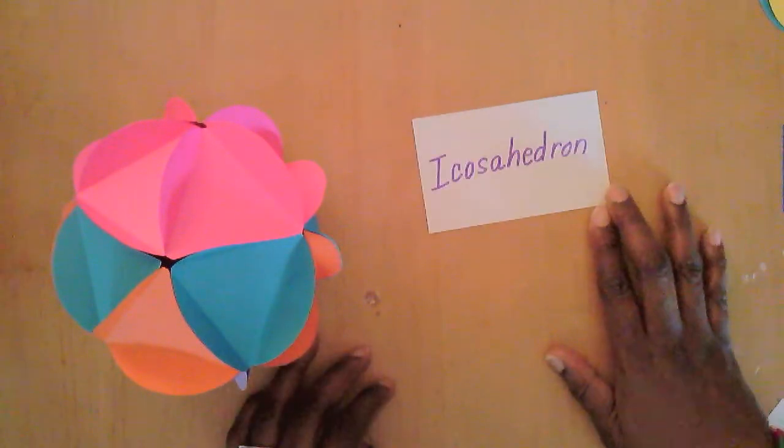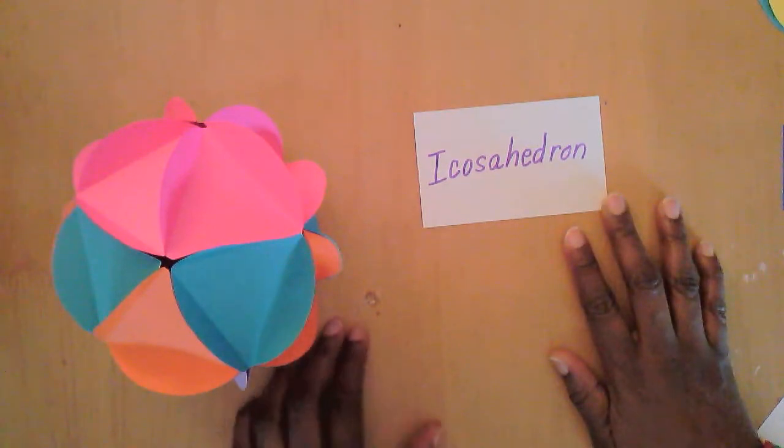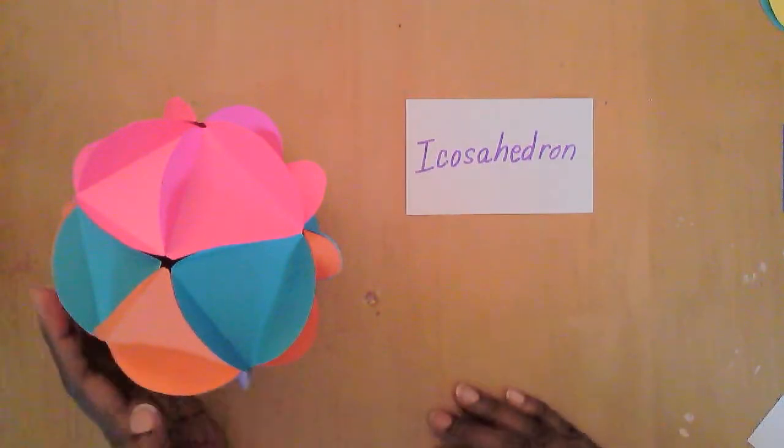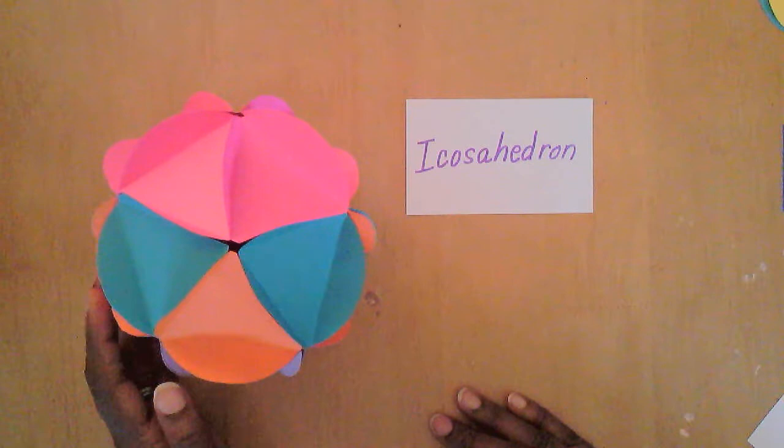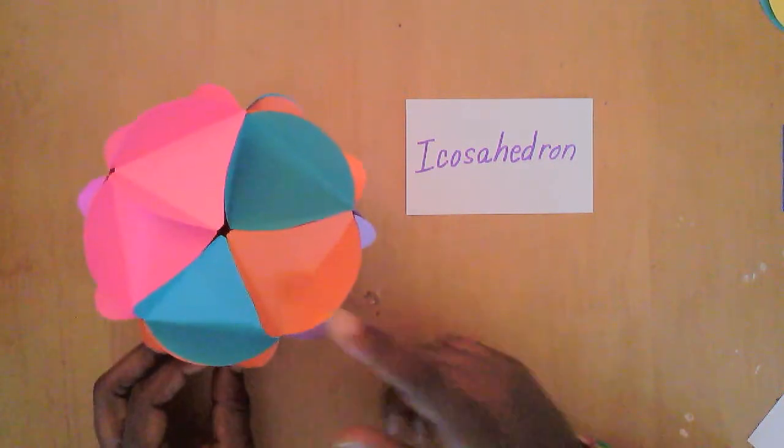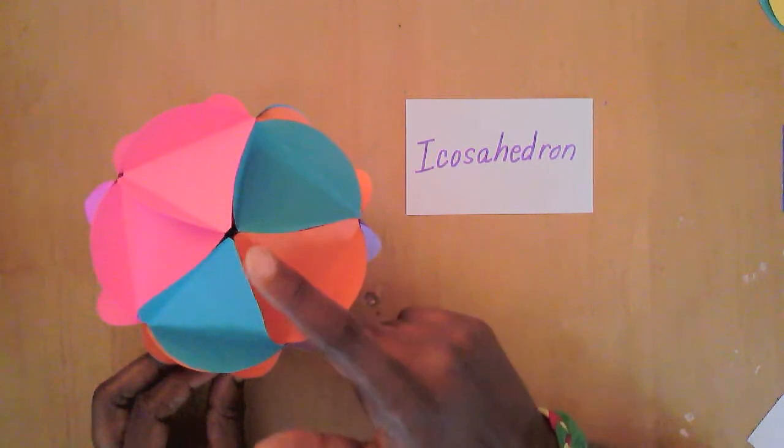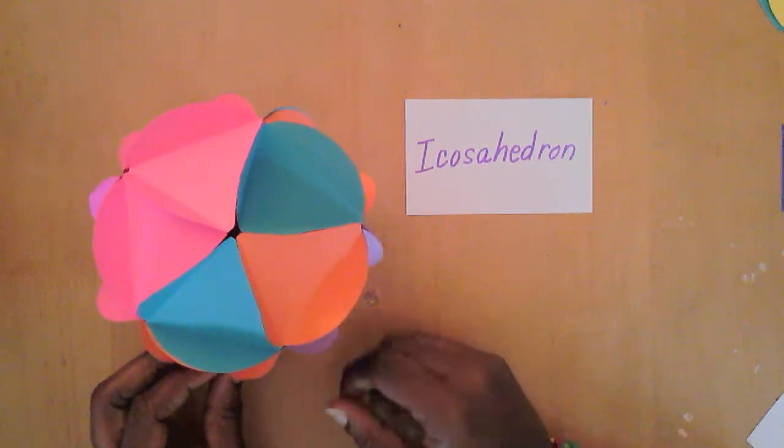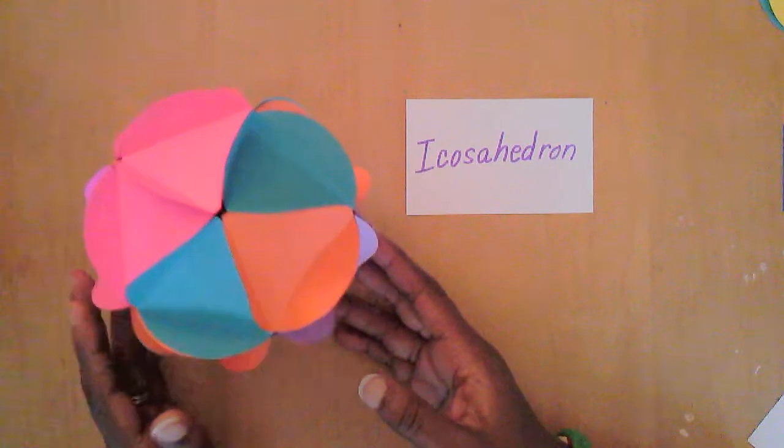So the word of the day is icosahedron. In geometry a polyhedron is a three-dimensional form with flat polygonal faces. The faces on these icosahedrons are triangles. They have straight edges and sharp corners or vertices.